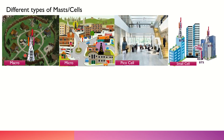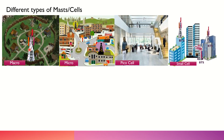One BTS or one base station has multiple antennas, meaning it has multiple cells. Depending upon the kind of area we want to cover, we can plan them accordingly. If we want to cover a larger area, we use a bigger mast — this is known as a macro site.